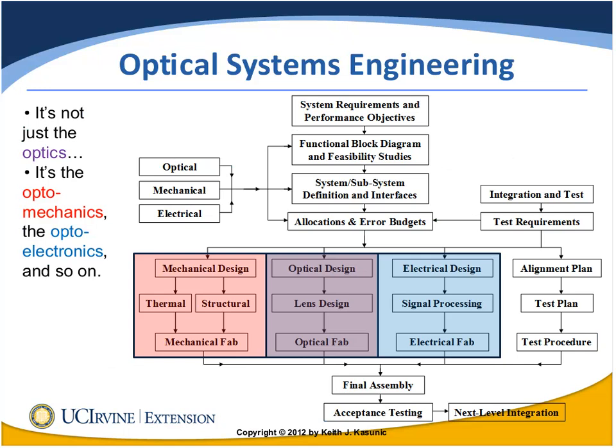The next chart shows optical systems engineering in general. One of the first things we notice is three boxes labeled optical, mechanical, and electrical. Putting together an optical system isn't just the optics — it's the optical engineer, the mechanical engineer, and the electrical engineer. We have optomechanics, optoelectronics, and systems engineering issues to concern ourselves with as well.